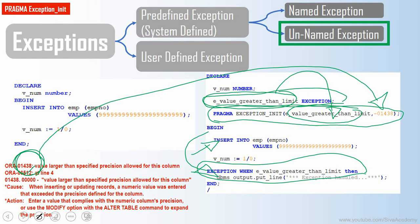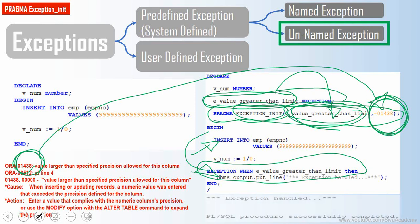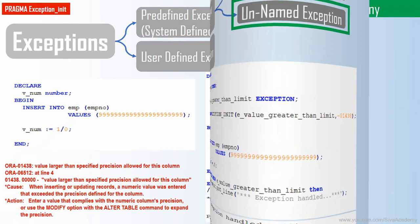So from an interview point of view, we use PRAGMA EXCEPTION_INIT to associate a name to an unnamed exception. In this EXCEPTION_INIT, we need to provide two pieces of information: a variable of exception type that will be the name, and the SQL error code — the Oracle error number — to which you want to associate this name.